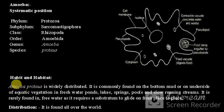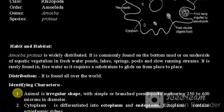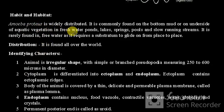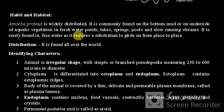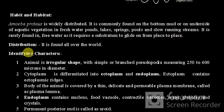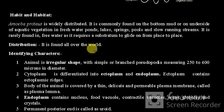Habitat: Amoeba proteus is widely distributed. It is commonly found on the bottom mud or on the underside of aquatic vegetation in freshwater ponds, lakes, springs, pools, and slow-running streams. It is rarely found in free water as it requires a substratum to glide on. It is found all over the world.